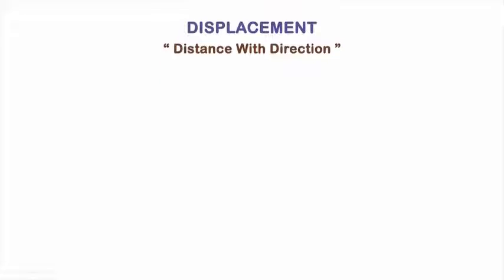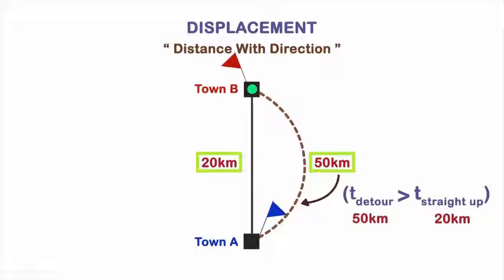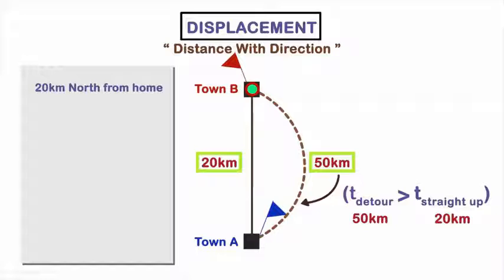You made two separate trips to this town. Was the distance covered in both cases the same? Have a good look. It wasn't. In each of the two cases, the distance was different. The time you took for the detour was greater than the time you could go straight across. But if you call someone to tell them where you are, in both cases, your location is this town which is 20 kilometers north of your home. The displacement in both cases is the same.